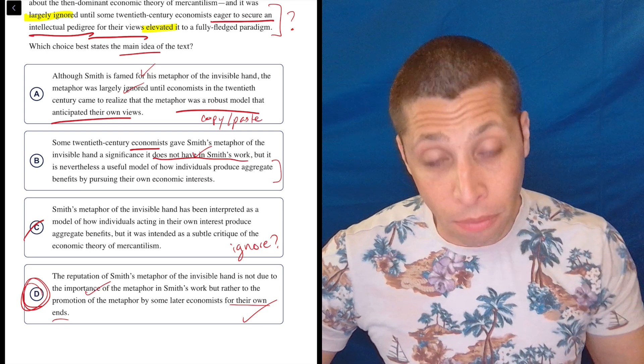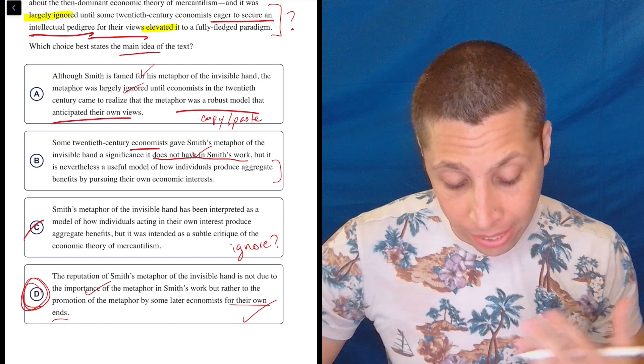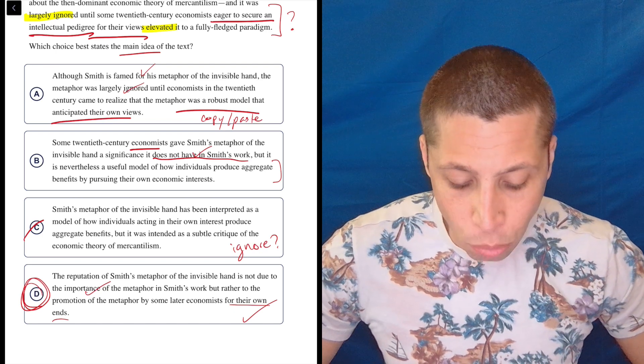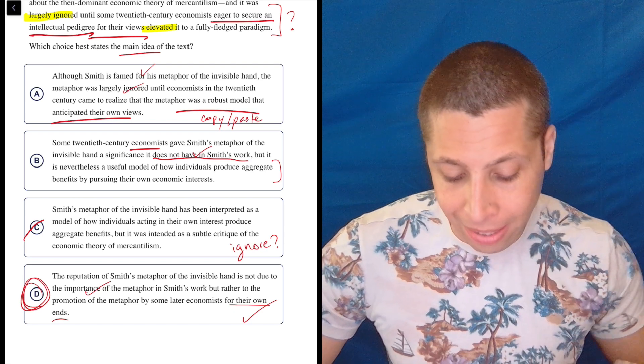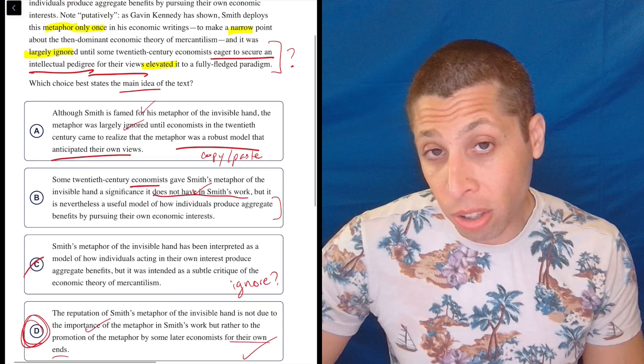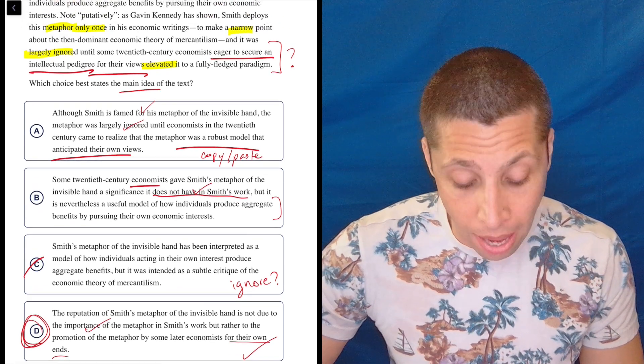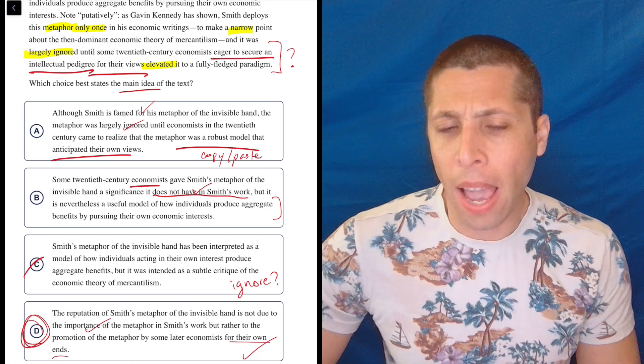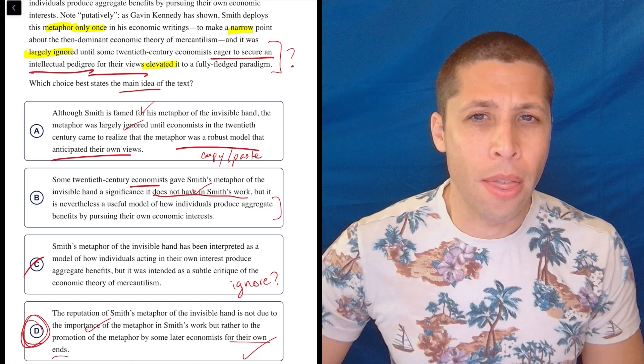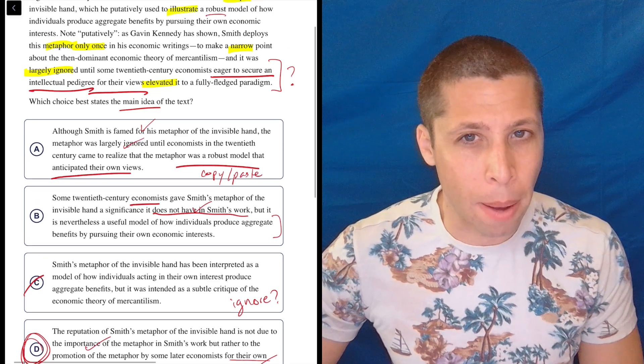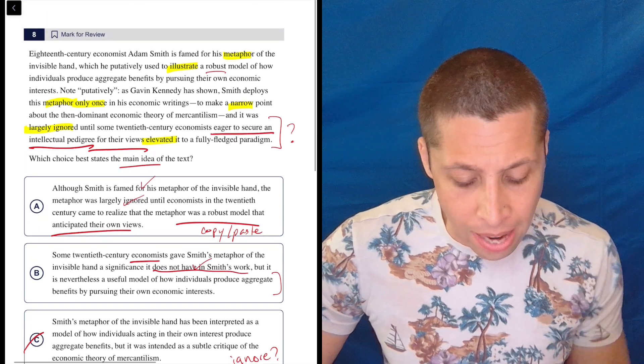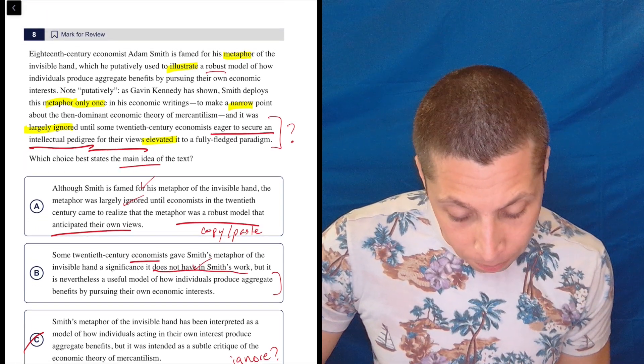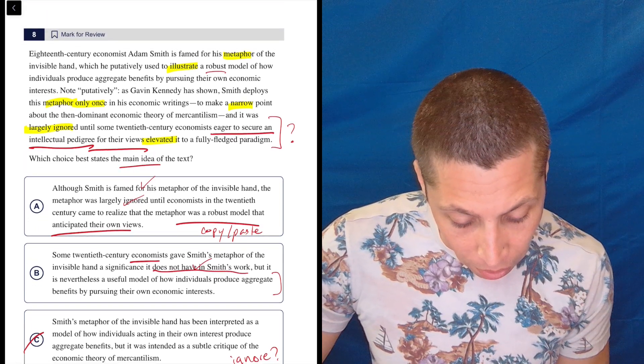A, going back to it. We said the first half is pretty good, but the second half is where I got confused. They came to realize that the metaphor was a robust model that anticipated their own views. That's just not really what it says. It doesn't say that they're doing it because they believed something and then they found this metaphor that also supported them.